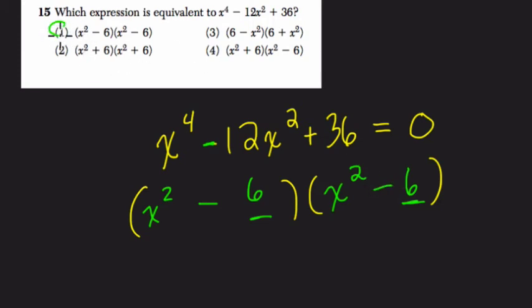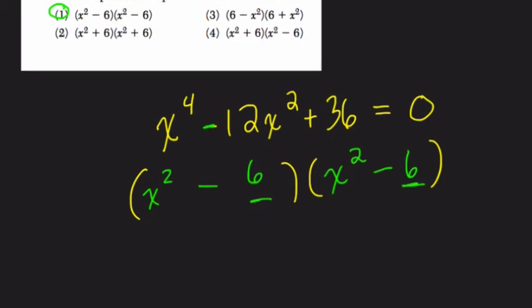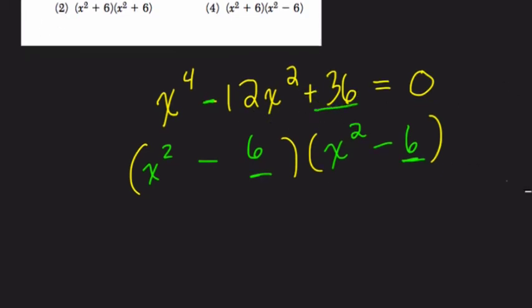Now here, the choice that matches that is choice 1. But let's just go over why it has to multiply to 36 and add to negative 12. If I redistribute this, I think you'll see it.